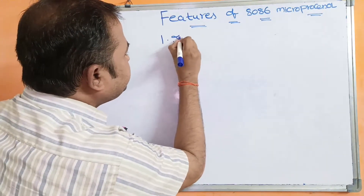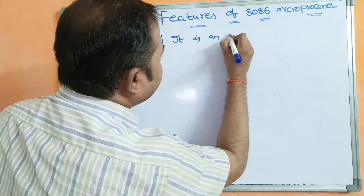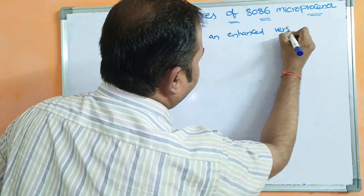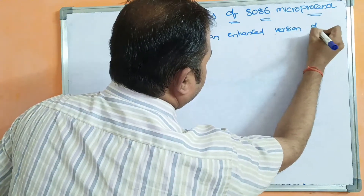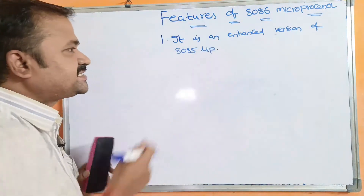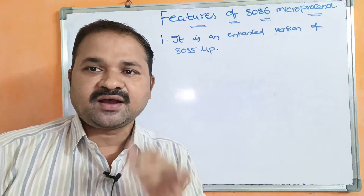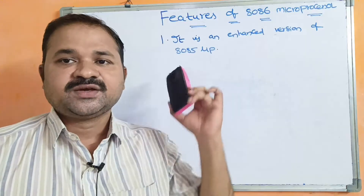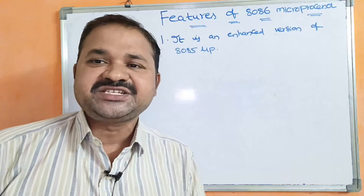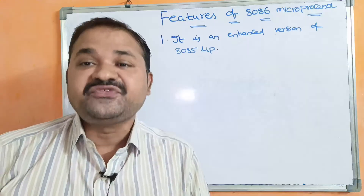The first feature is that the 8086 microprocessor is an enhanced version of the 8085 microprocessor. That means 8086 is an extension to 8085, supporting all of its features and adding its own.